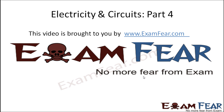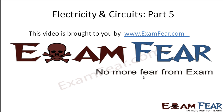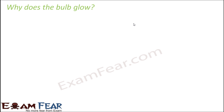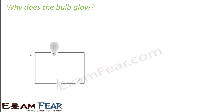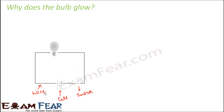Hello friends, this video on electricity and circuits part 4 is brought to you by examfear.com. The circuit diagram you see here shows different circuit elements: this symbol represents a switch, this symbol represents a cell, and these straight lines represent wires. That is how we draw a circuit diagram.